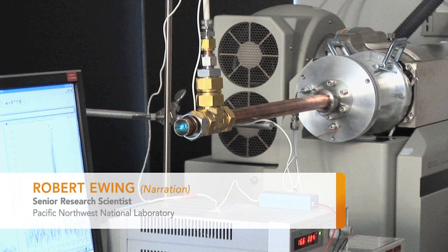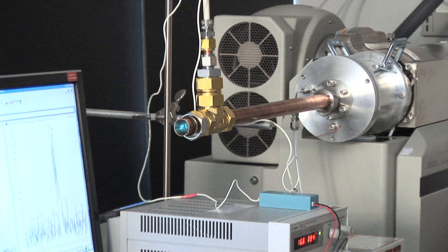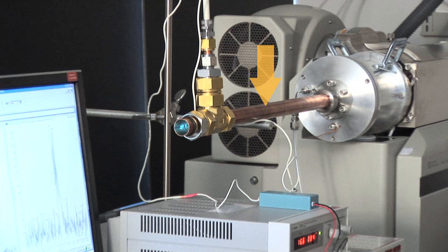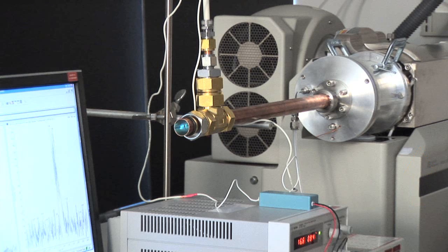This is a demonstration of the real-time vapor detection capability developed here at PNNL. This is an ionization source built at PNNL for the selective ionization of explosive compounds. This is a reaction tube which provides a longer residence time and enables enhanced vapor detection of explosives. This is a commercial mass spectrometer, and the interface of the ionization source with the reaction tube to the mass spectrometer will enable the rapid commercialization of this technology.